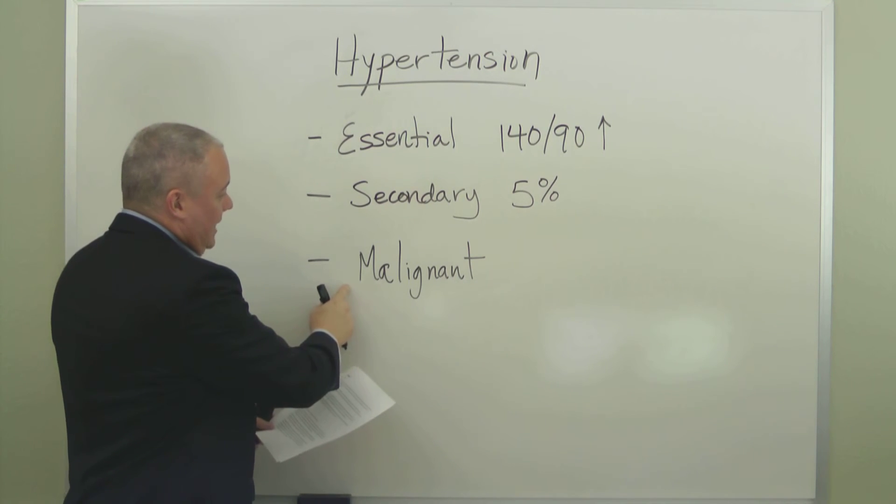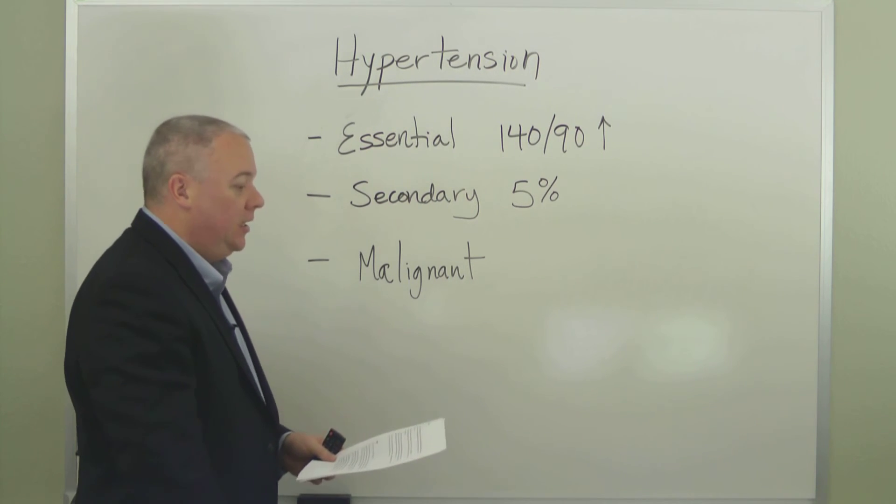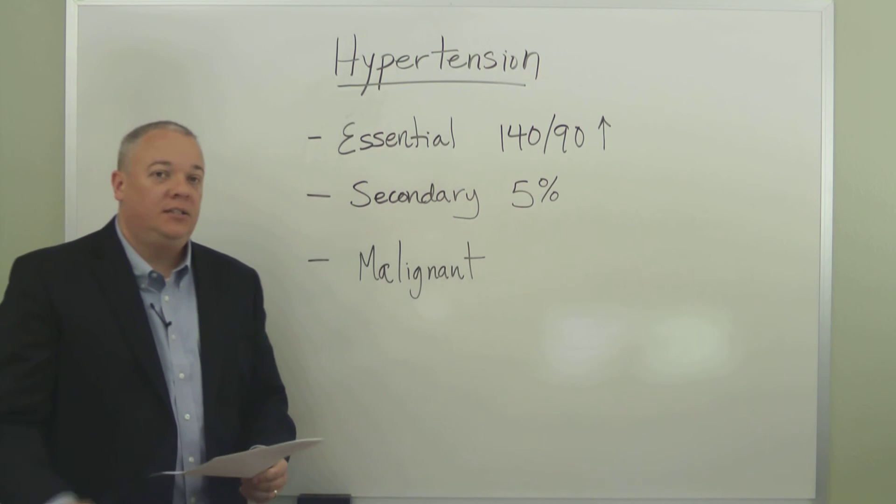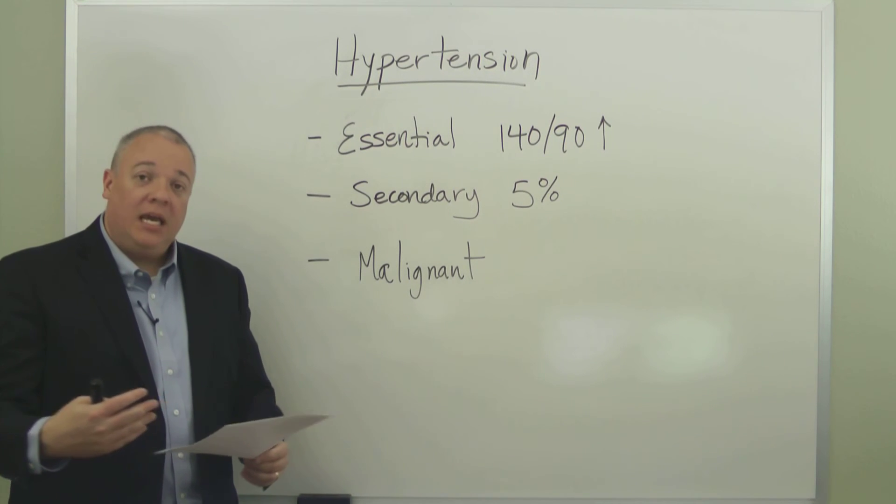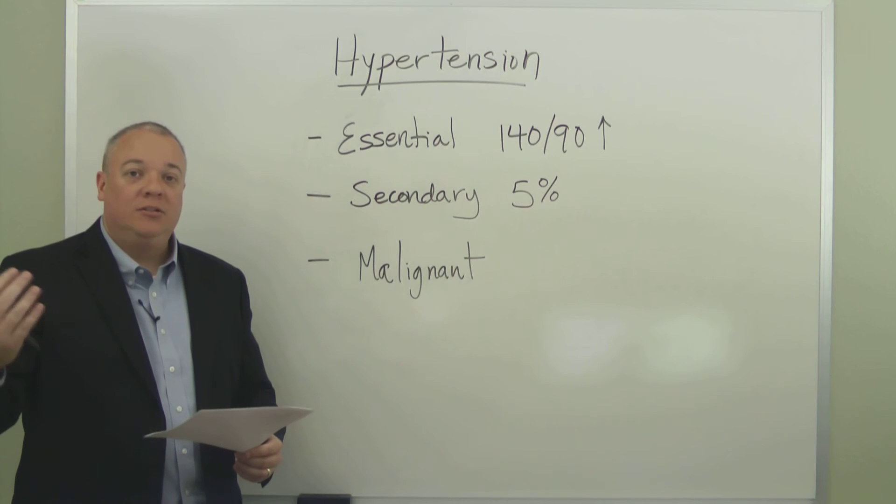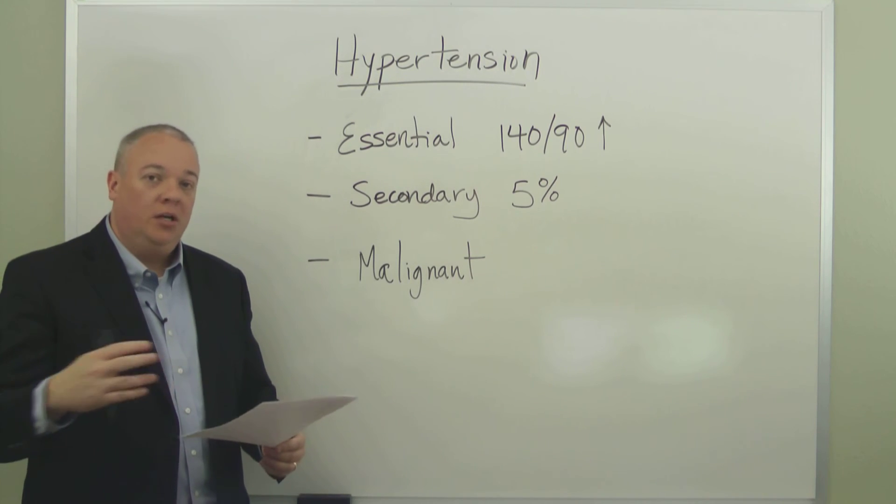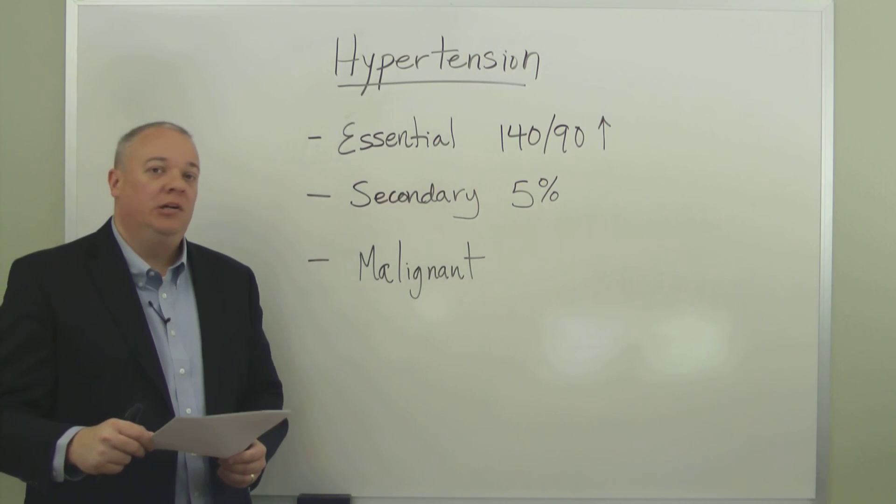And then last is malignant hypertension, which is a life-threatening condition that needs to have immediate treatment by various medications where the blood pressure is brought down slowly, no more than 25% over a one to two hour period.